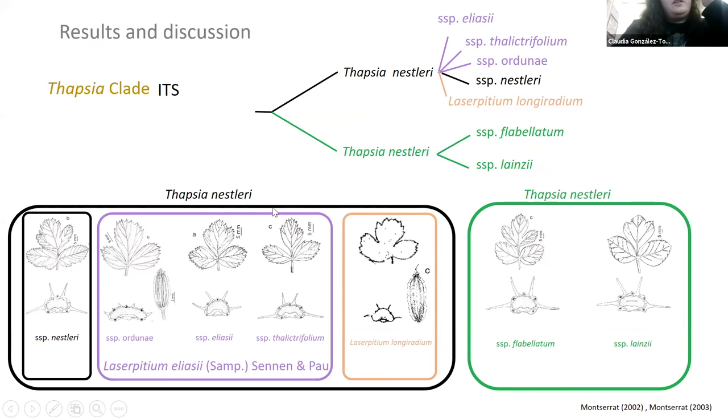And if we look at the morphology, we can see that in the original Thapsia eliasii clade, we have all this morphological variability. And in the new Thapsia eliasii, which we have to find the name, we have this variability. However, it's really complicated to morphologically distinguish this taxa from the other taxa. So this is a little bit puzzling.